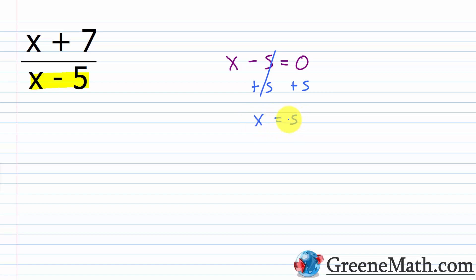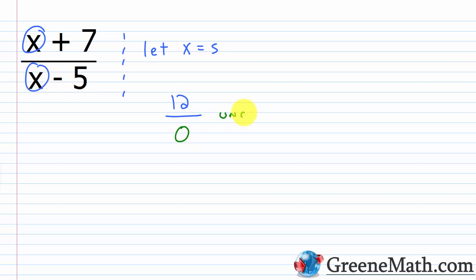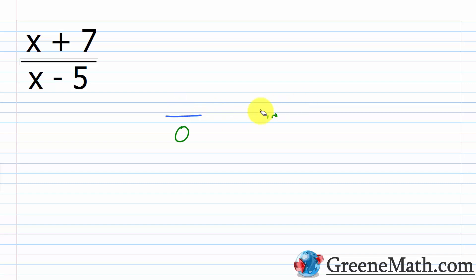We get x is equal to 5. You can easily verify this: if we let x equal 5 and plug it in, the numerator becomes 5 + 7 = 12, and the denominator becomes 5 − 5 = 0. This is undefined, and this is what we're trying to prevent. So when we have a rational expression, we find our restricted value or restricted values. We note that this expression is defined for everything except x = 5, so we write x does not equal 5.